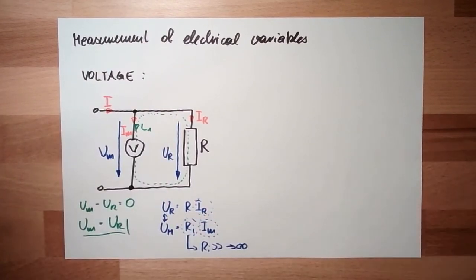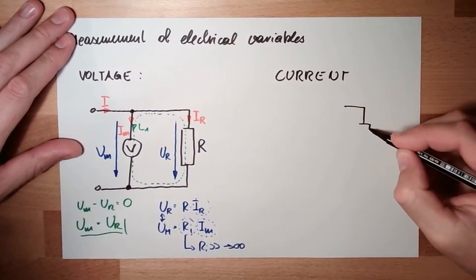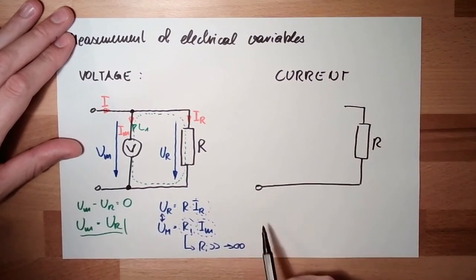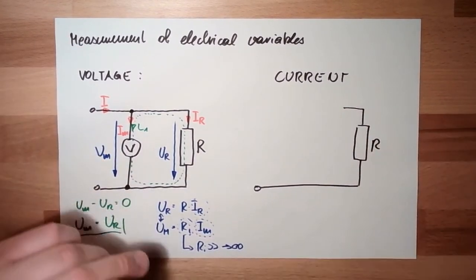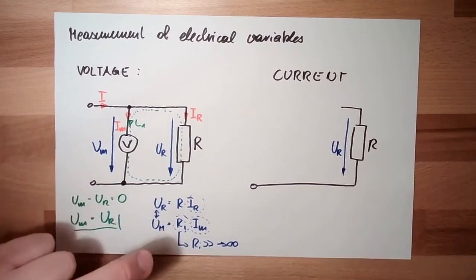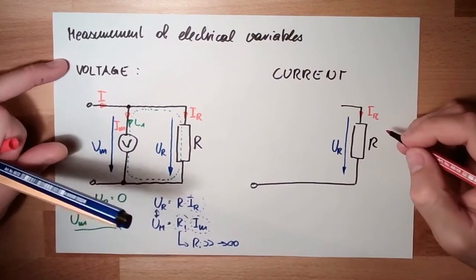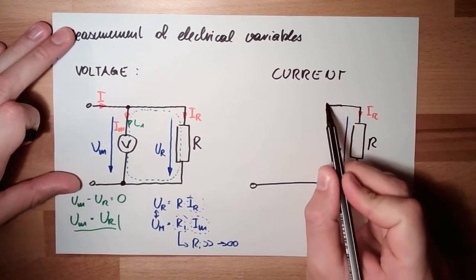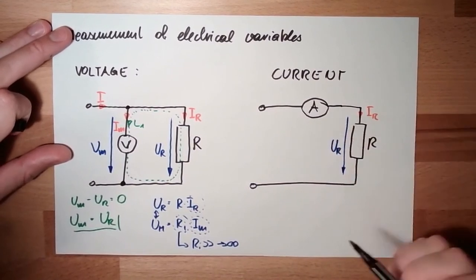The second thing we measure is, of course, the current. Here's again, our thing we want to measure the current. Here is again, the two values, but now I'm interested in this value here. And what am I doing? To be sure, the same current is running through my measurement device, my ampere meter, I have to put it in serial.